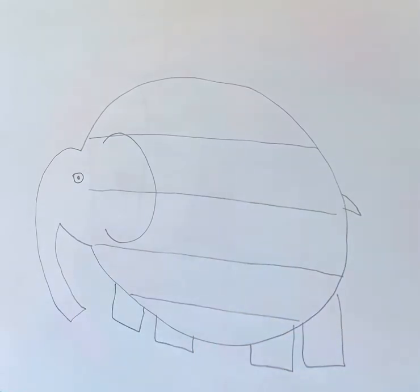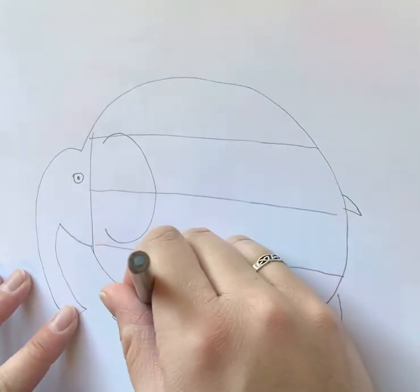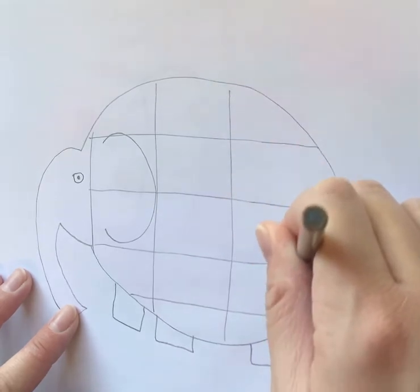Next, draw straight vertical lines across the elephant and try to evenly space those.